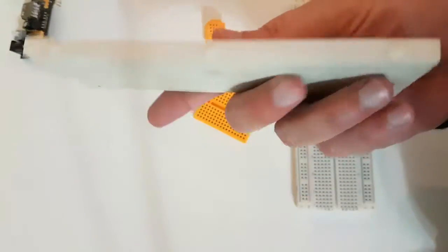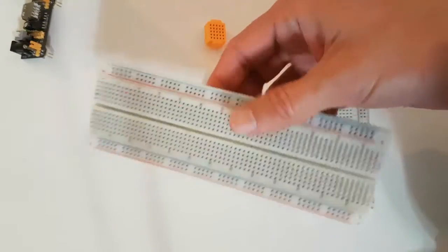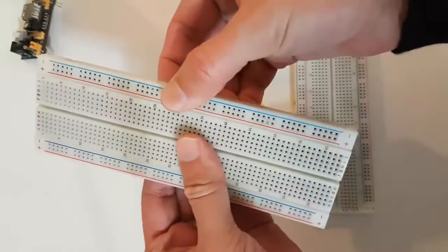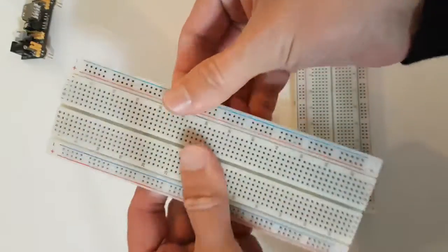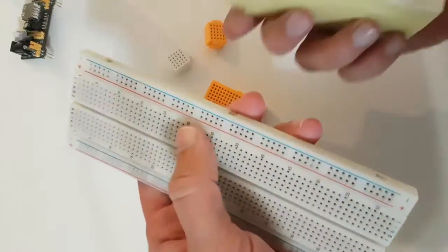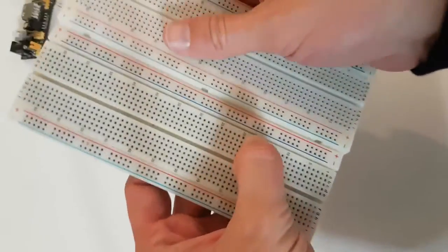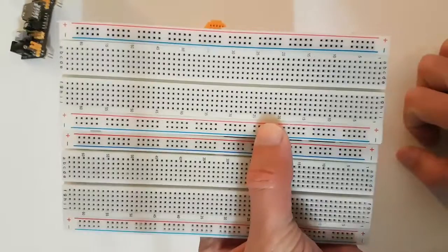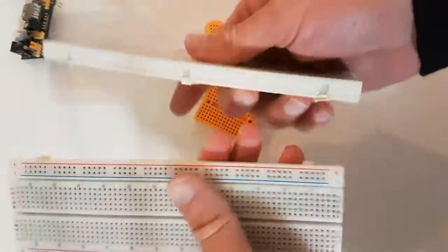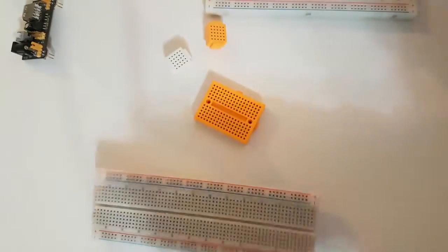Well, that was a short video about breadboards. Oh, I almost forgot - the power rails can be detached from the breadboard, and you can also attach several breadboards to achieve a bigger one. Have fun!